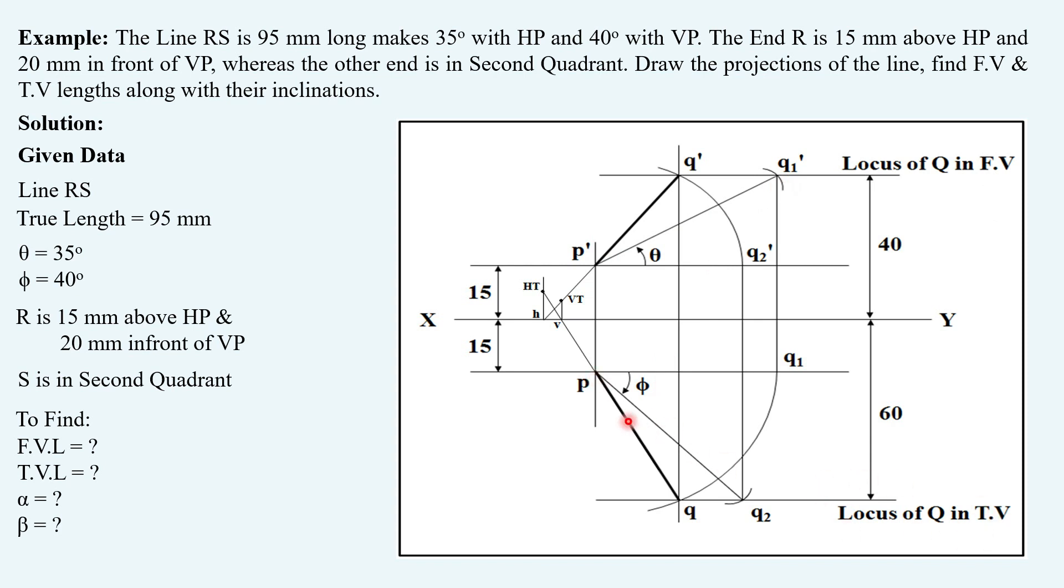but here, the top-view locus, you have to take this angle phi upwards and then draw the true length in this manner. So you get the locus above XY. That's the only change you have to remember.